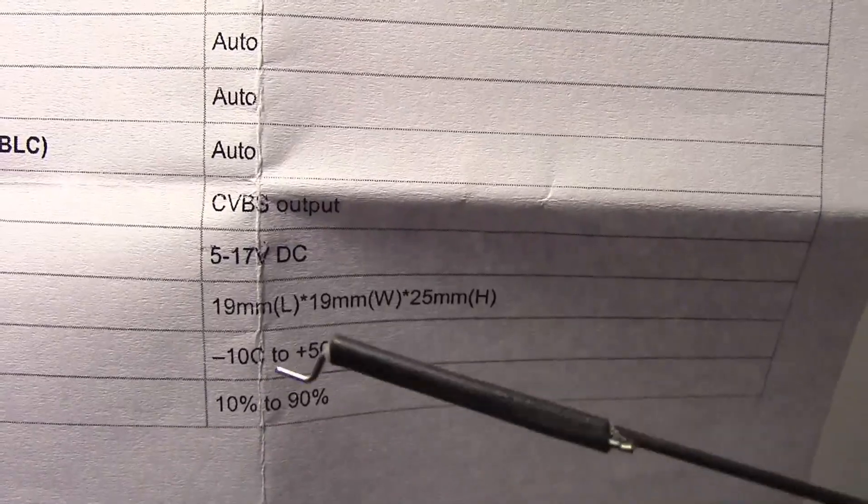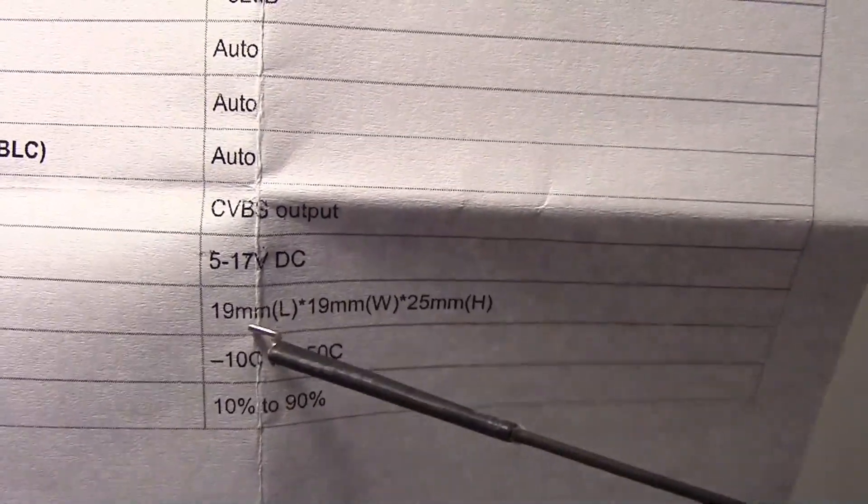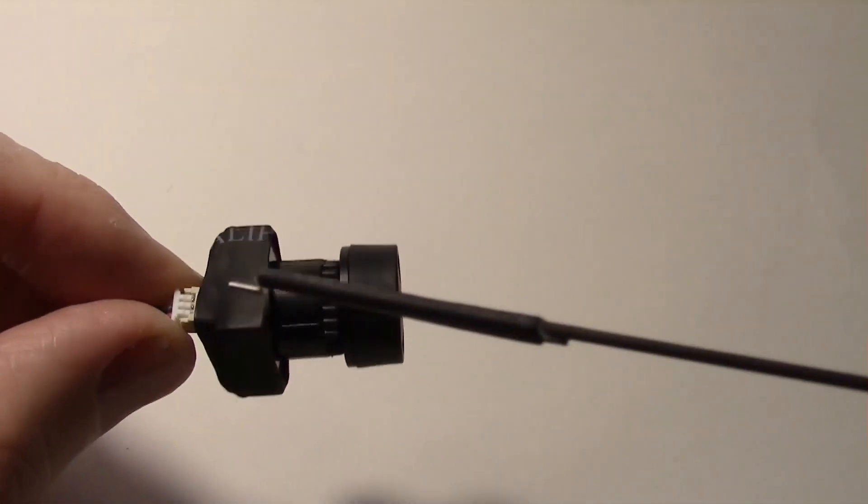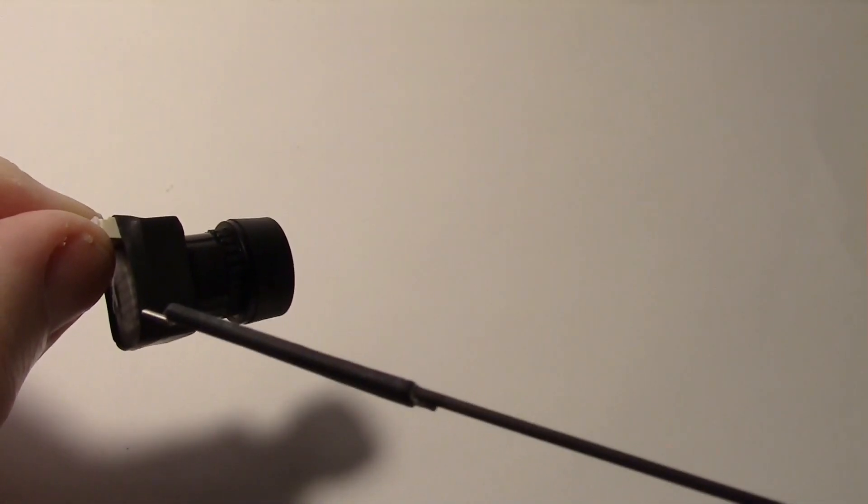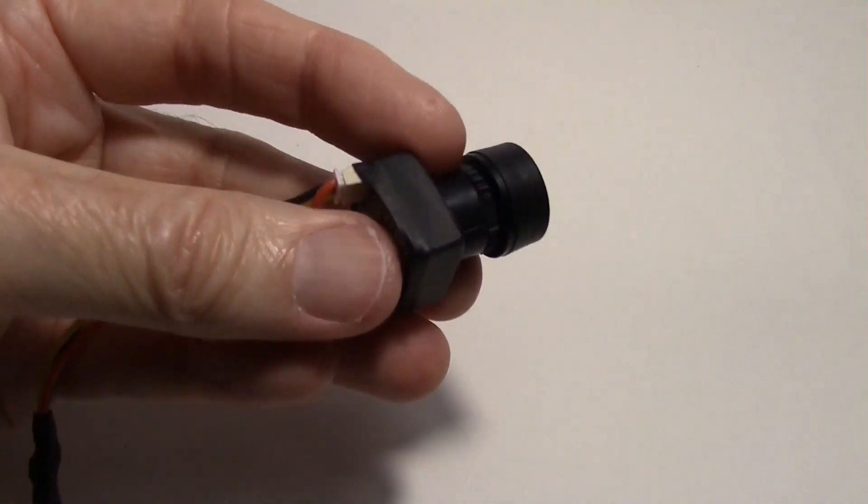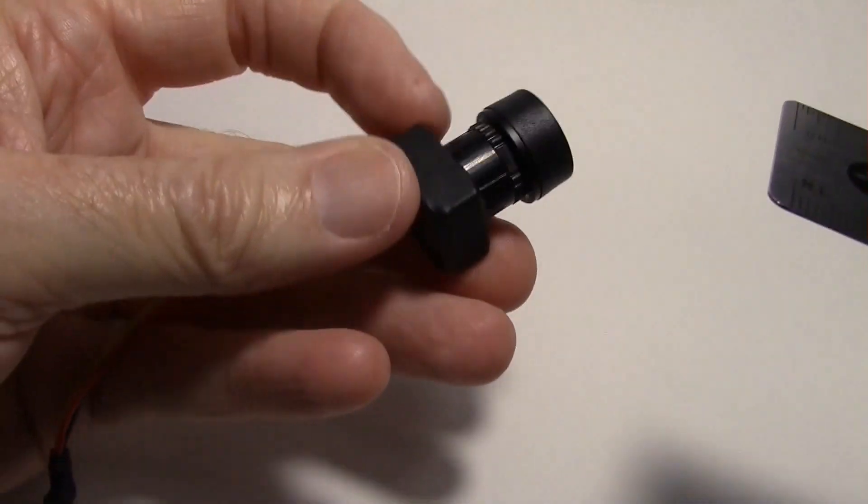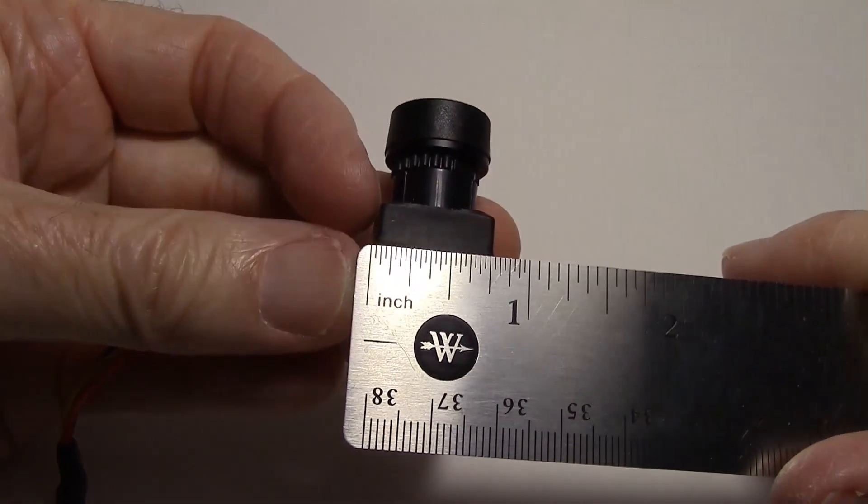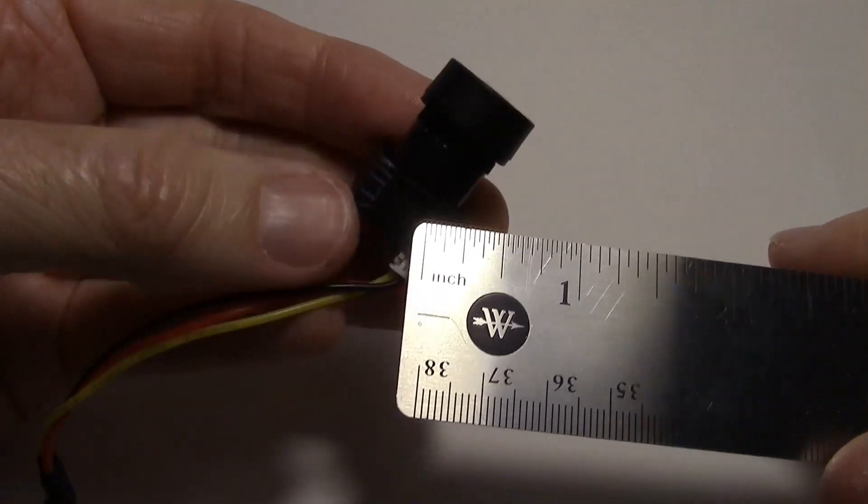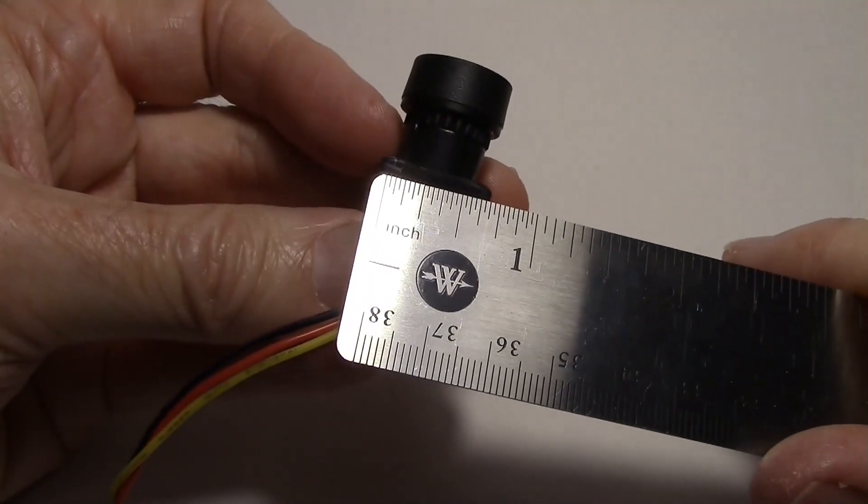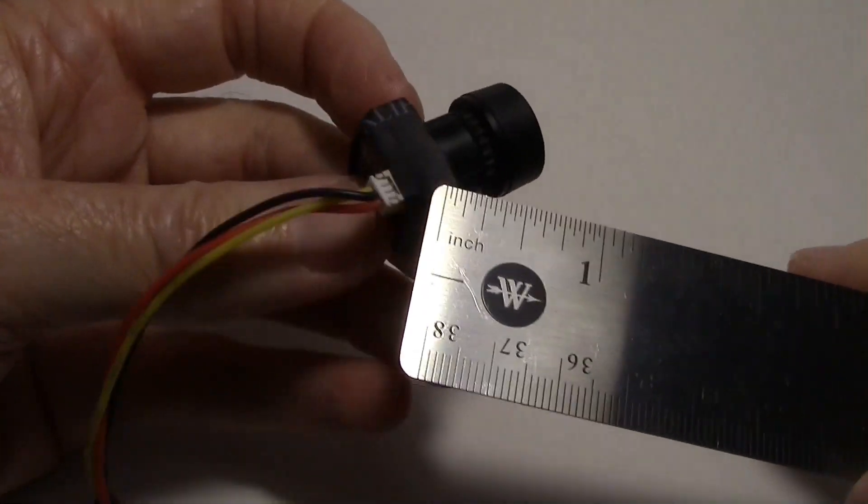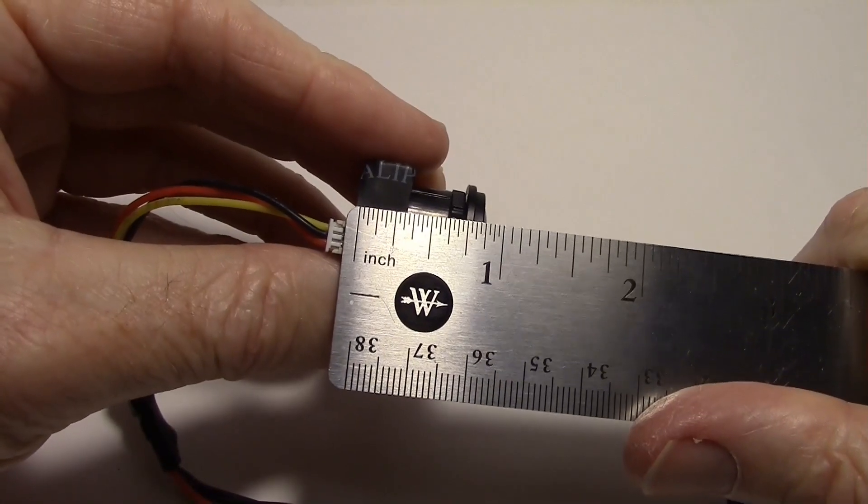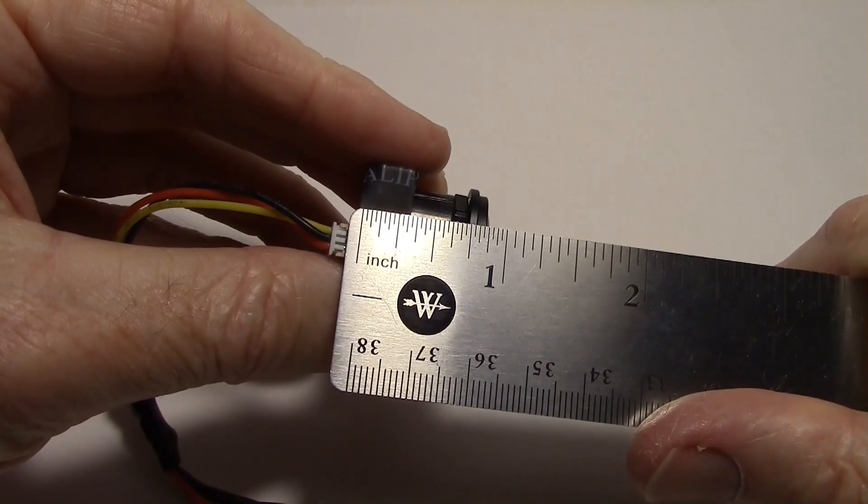The size of the camera is 19 millimeters by 19 millimeters by 25 millimeters out to the end of the lens. For us American guys, that's three-quarters of an inch by three-quarters of an inch, and about seven-eighths out to the end of the lens.